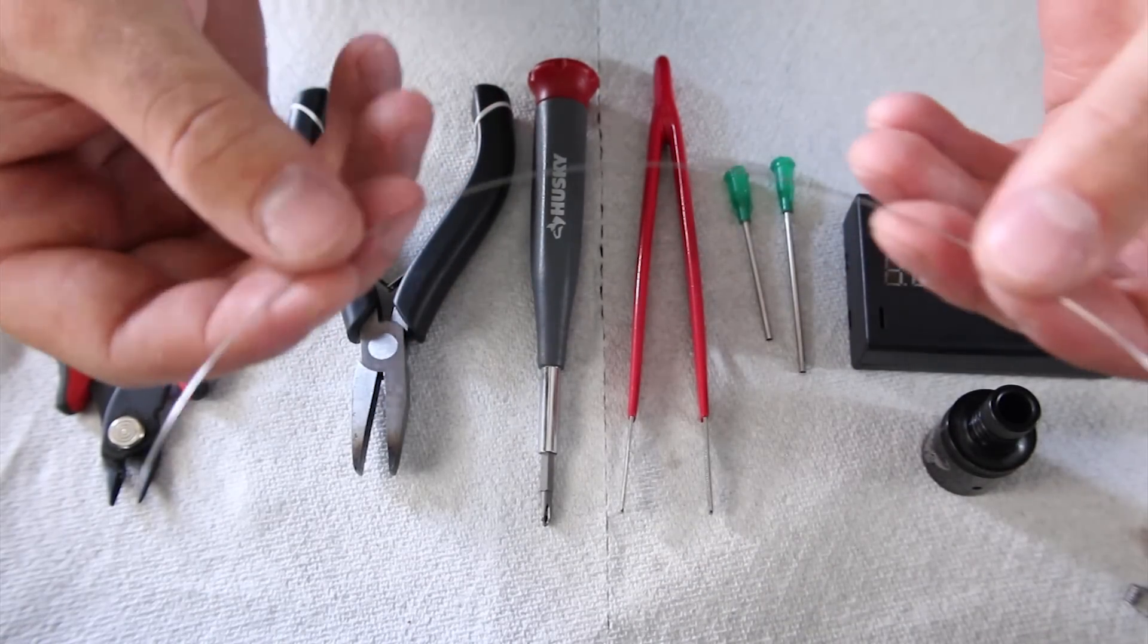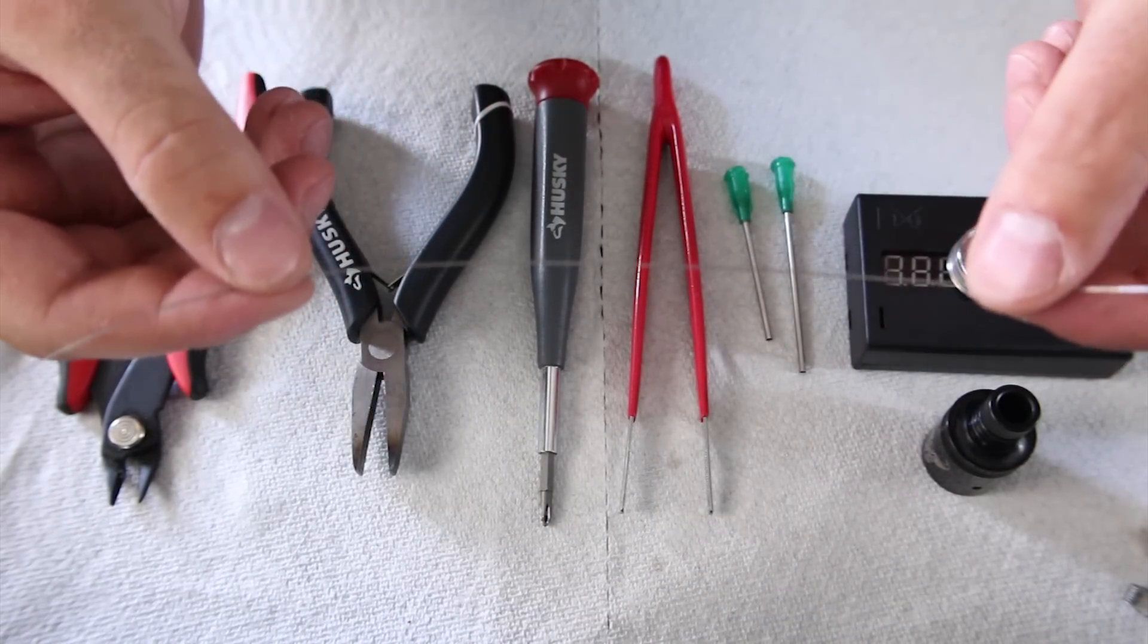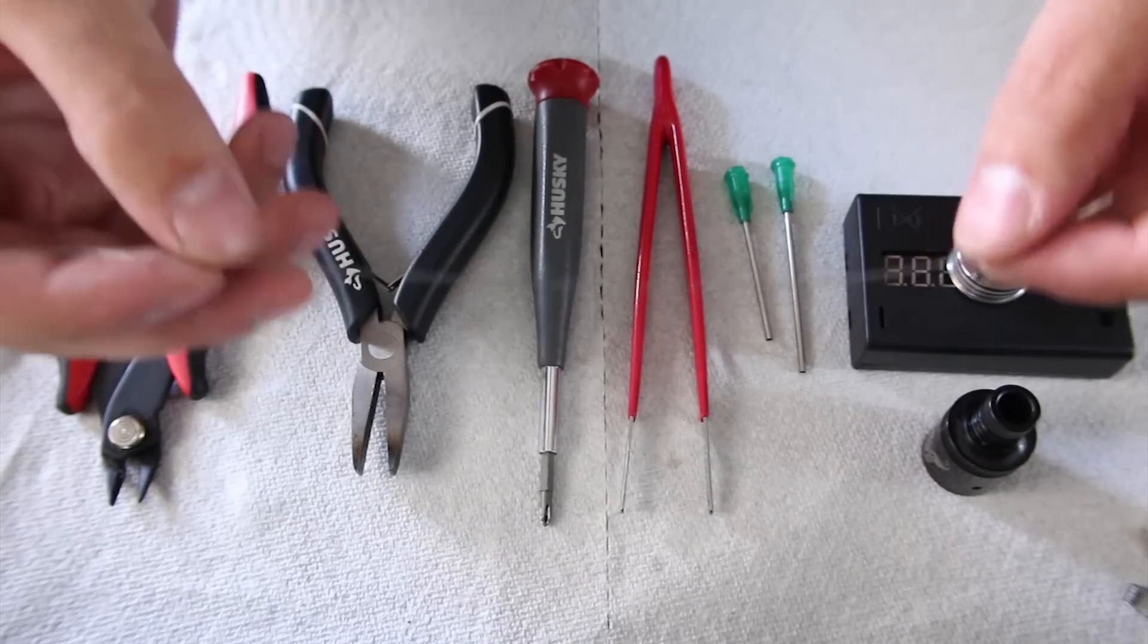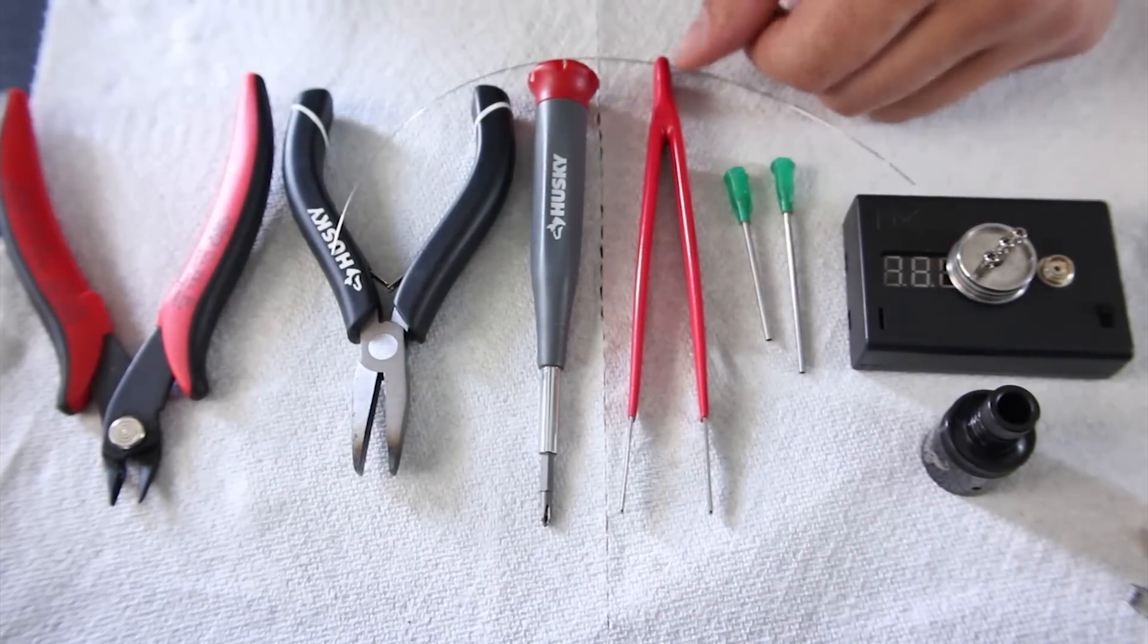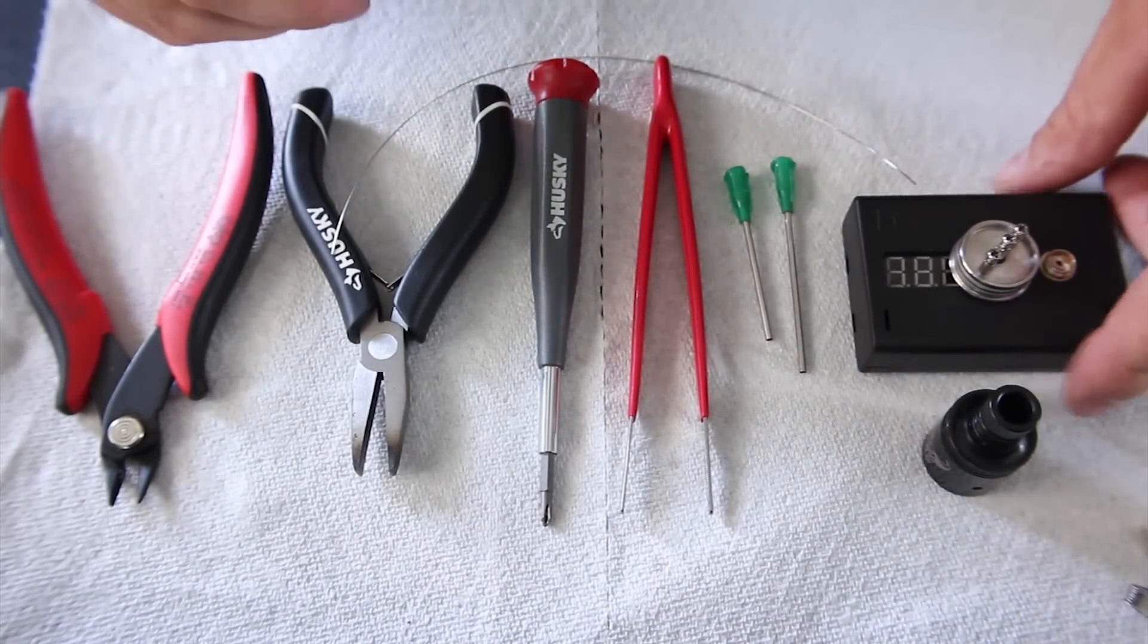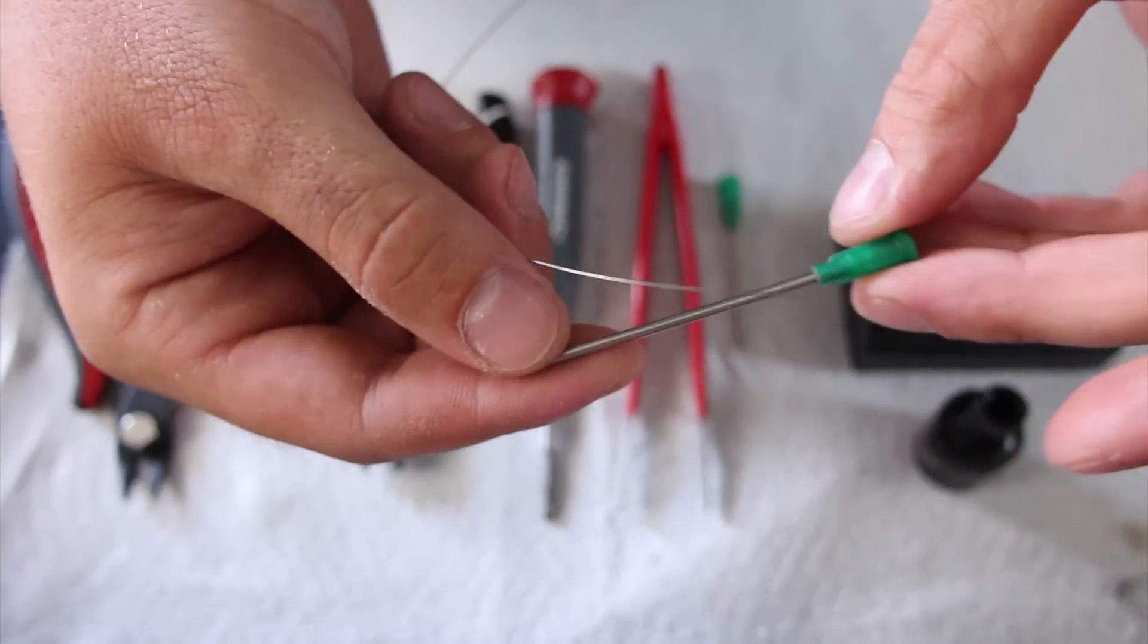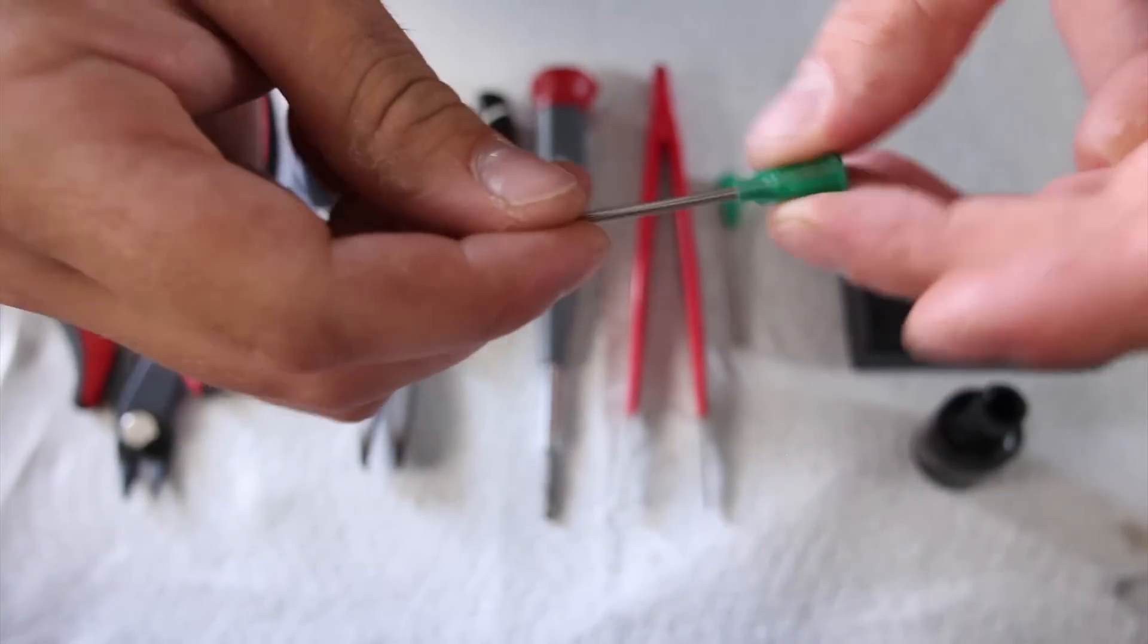We have our tweezers, screwdriver, pair of pliers, and wire cutters. Here I have my 24-gauge kanthal wire, about a foot. That's about how much you're going to need. And I do have my wicks pre-made.